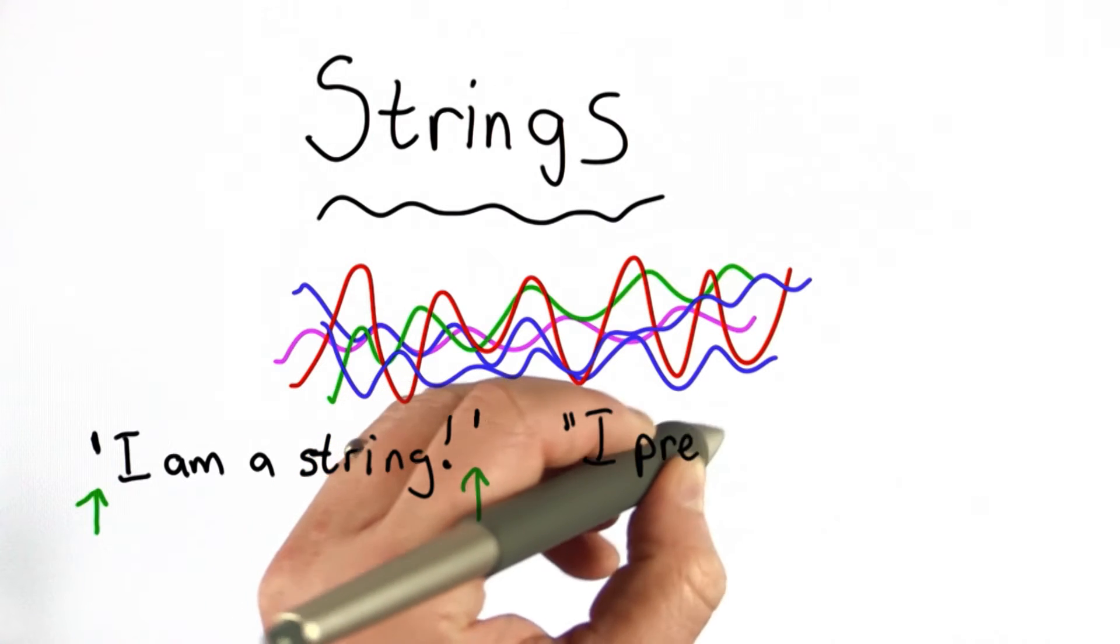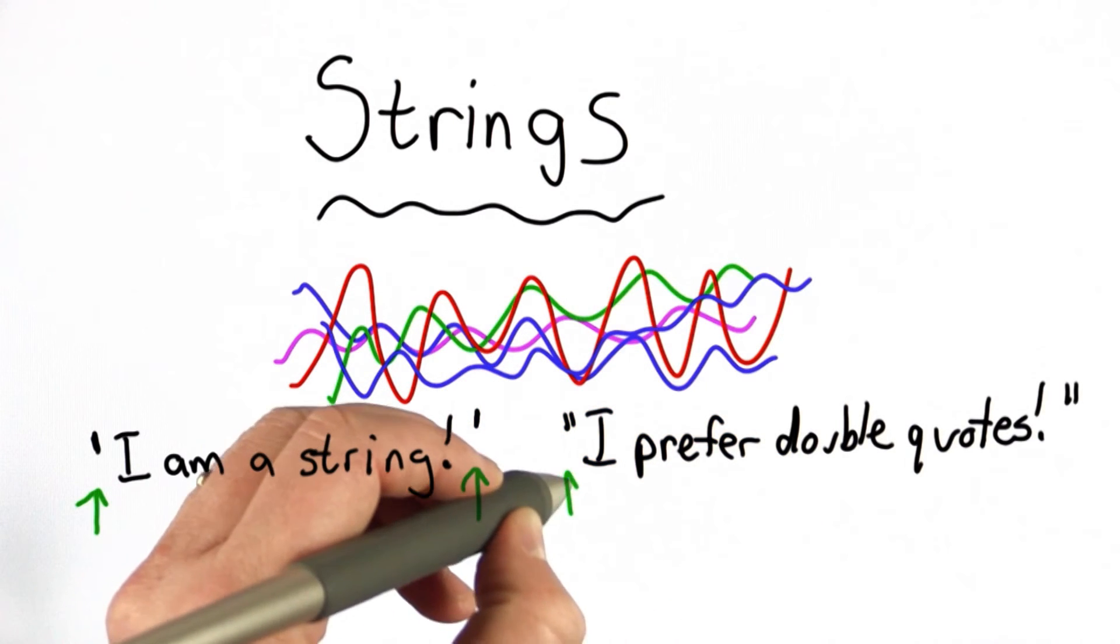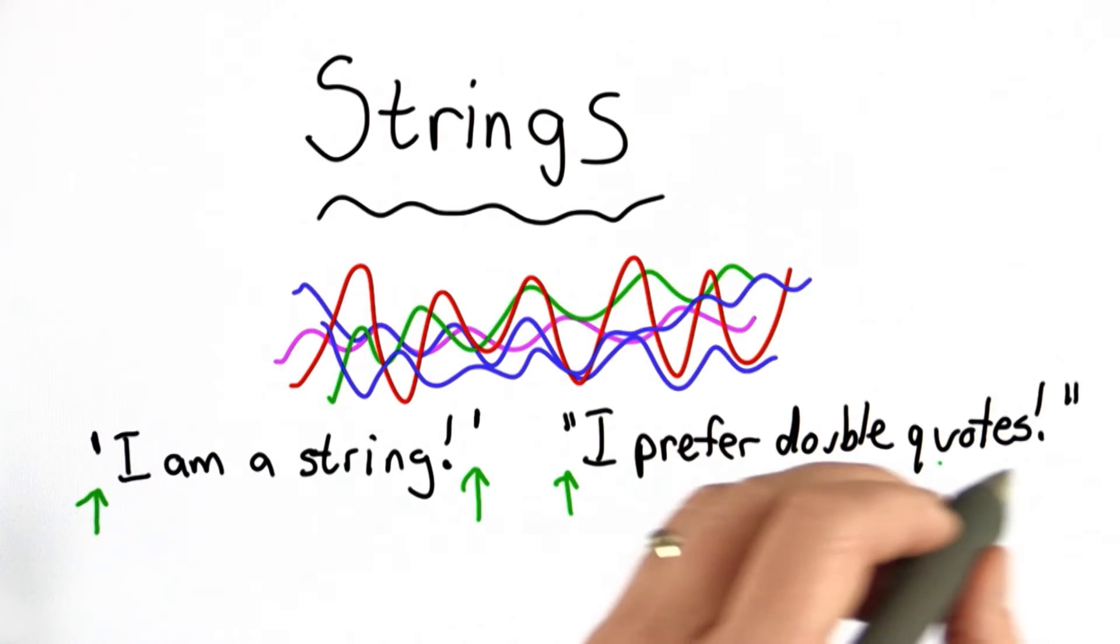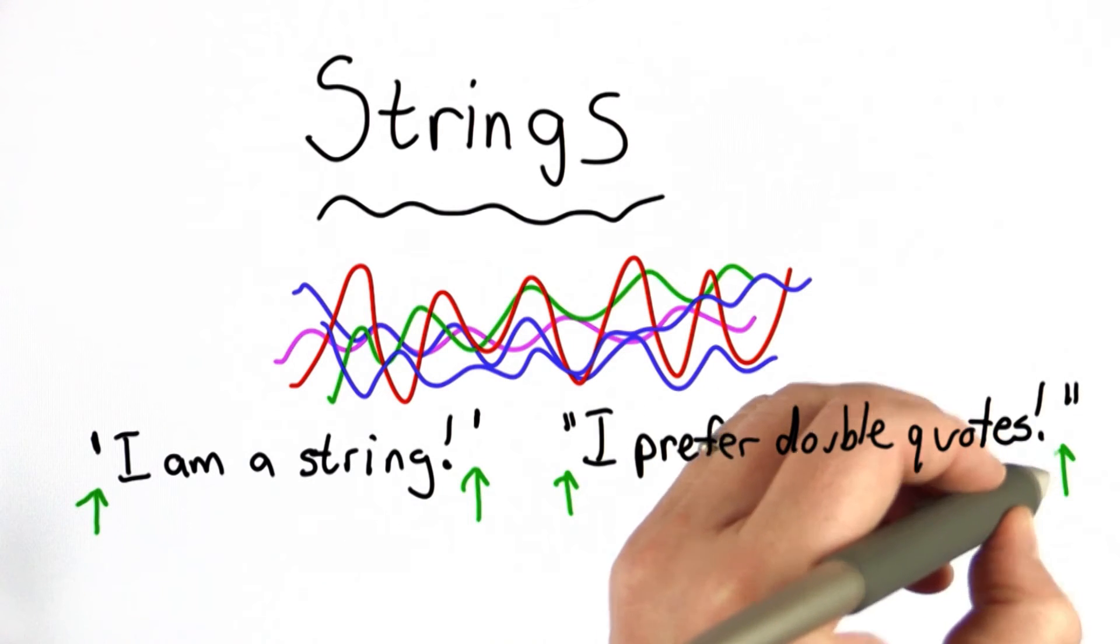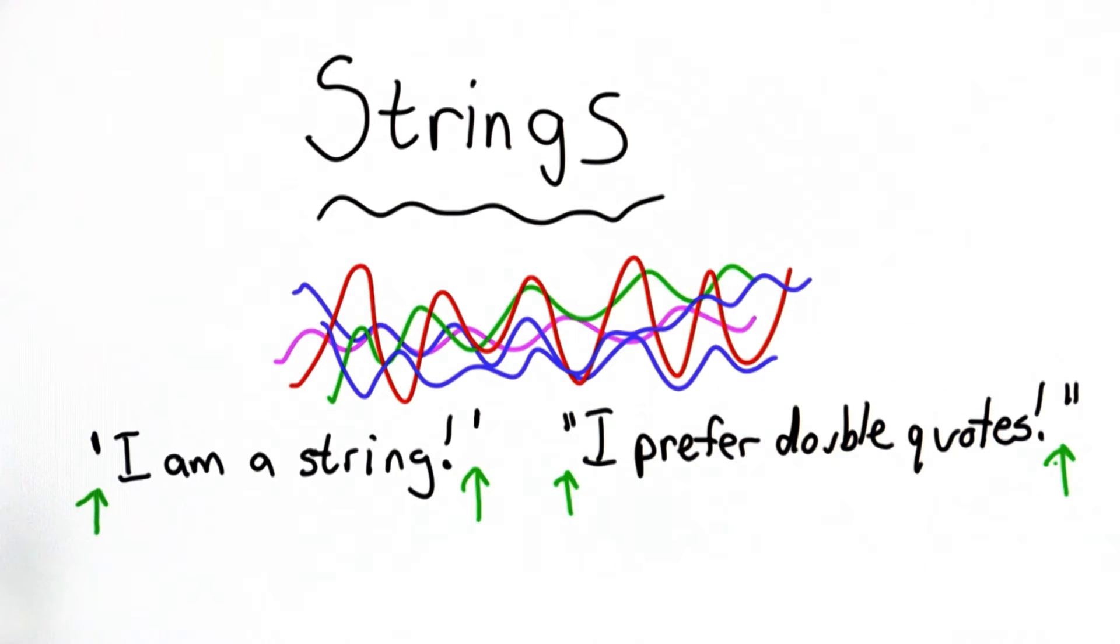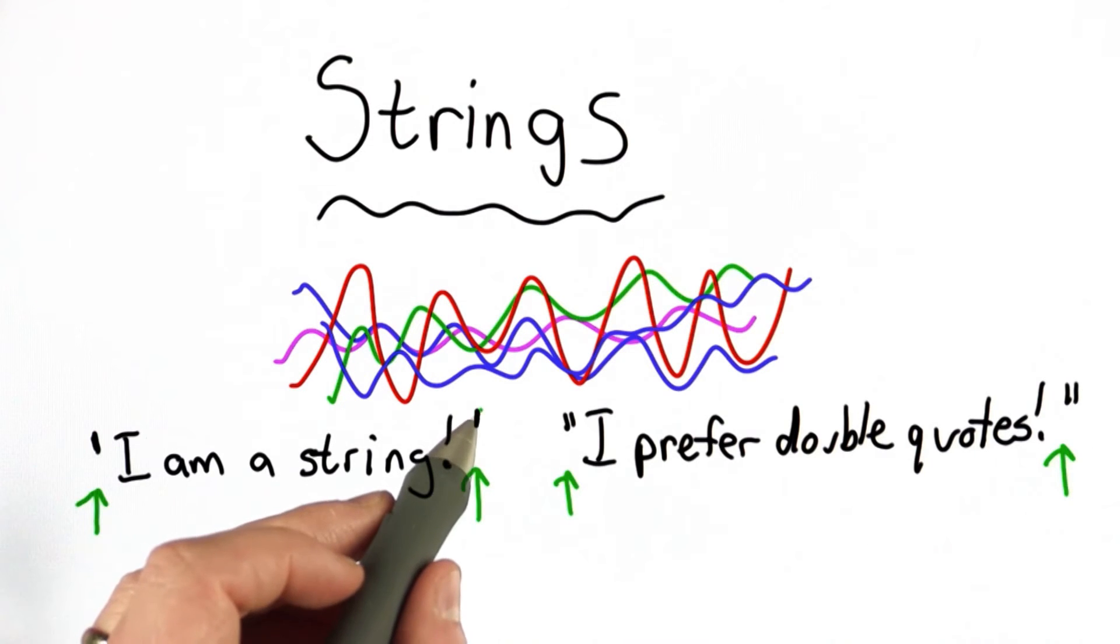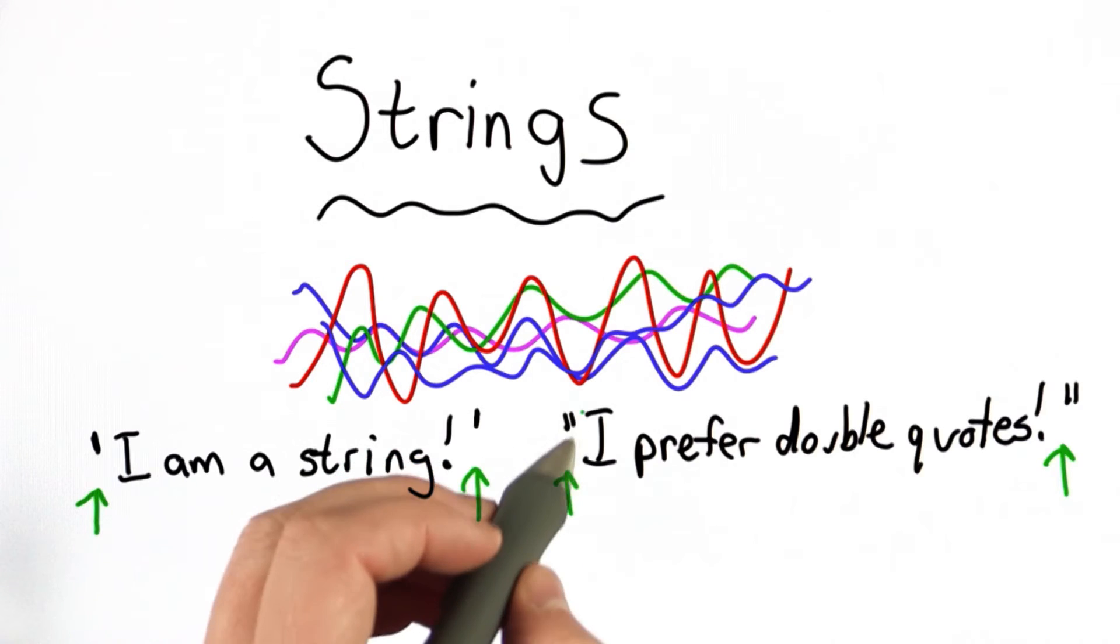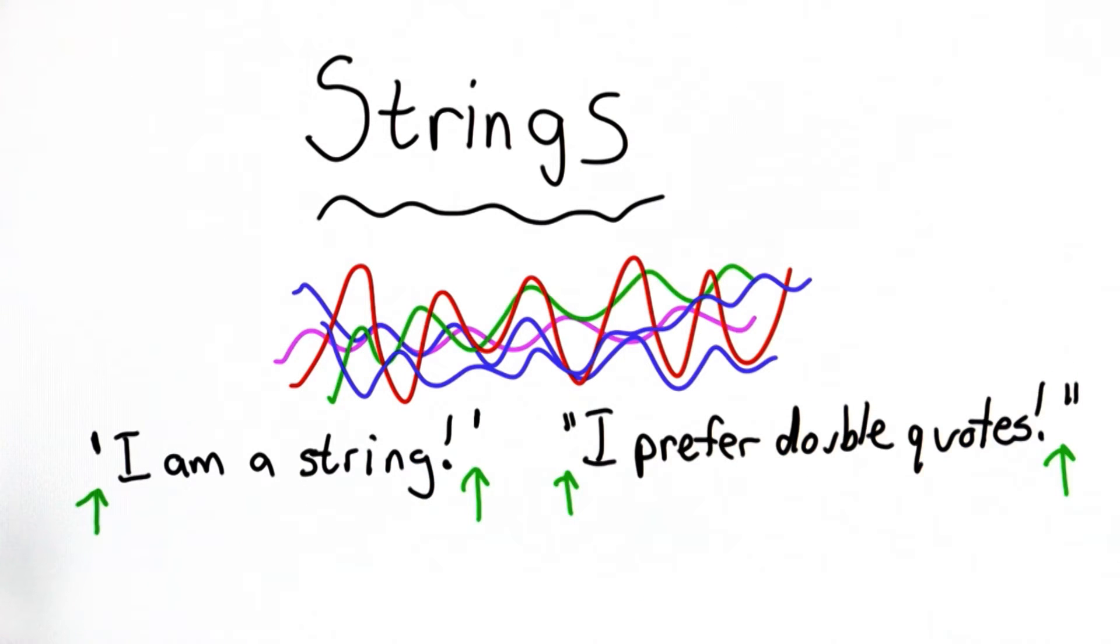If we want, we can use double quotes instead. If we use double quotes, then the double quote starts the string. We can have a sequence of characters and a double quote that ends the string. The only requirement is that if we start the string with a single quote, it has to end with a single quote. If we start the string with a double quote, it has to end with a double quote.